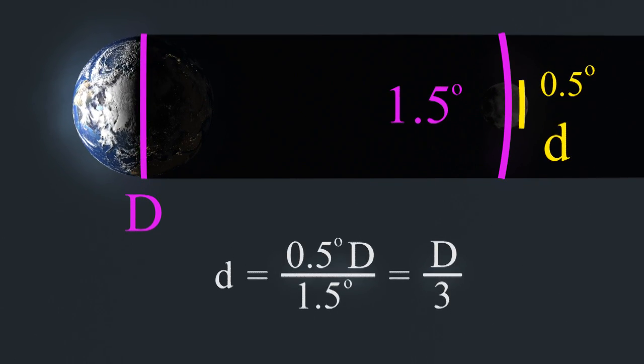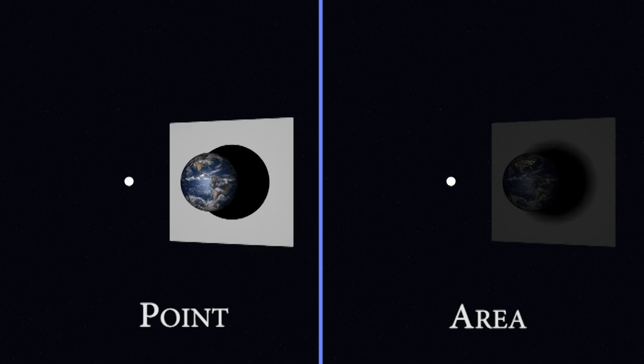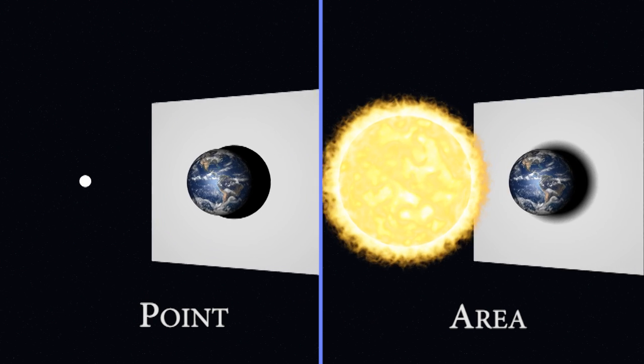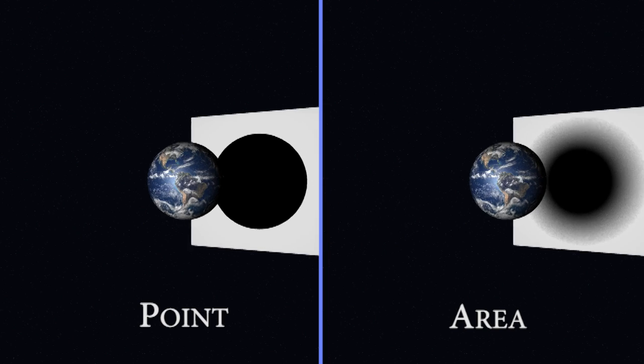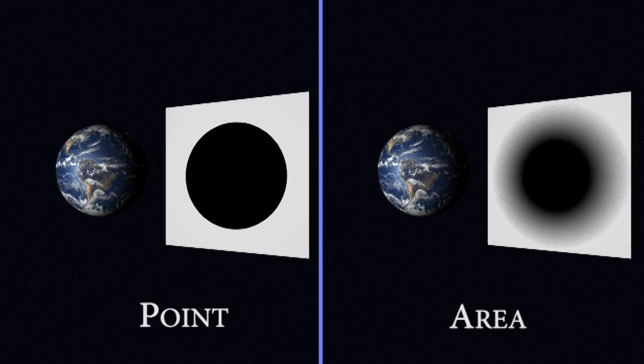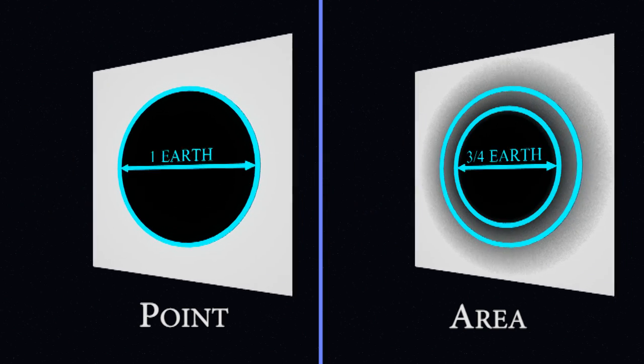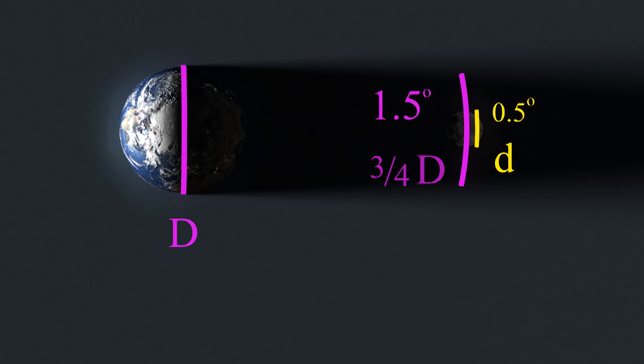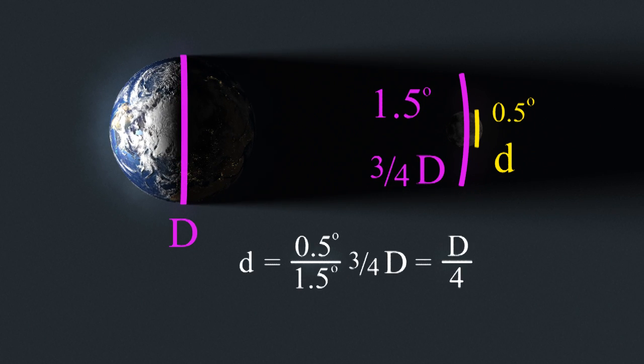But this is incorrect because the sun is not a point of light. It's an area of light. This means that the sun casts a soft shadow, which is not one Earth diameter, but three-quarters. With this correction, we get a moon that is a quarter the size of the Earth.